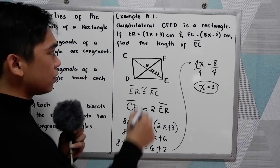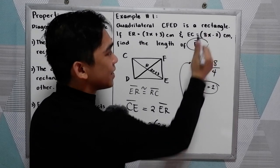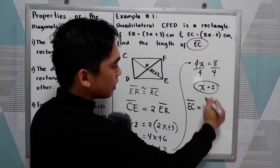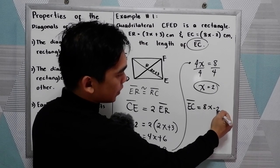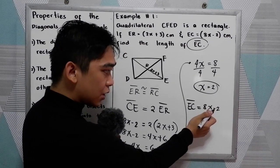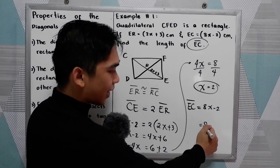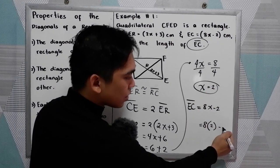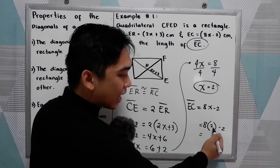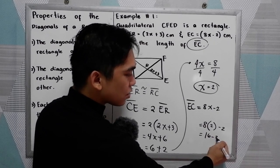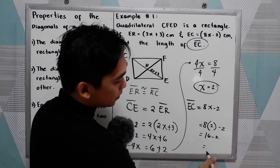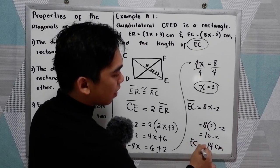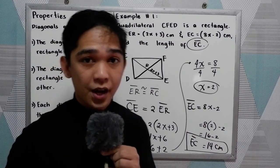So 4x equals 8, and dividing by 4, x is equal to 2. Since x equals 2, we can now get the value of E-C. E-C is equal to 8x minus 2. Substituting: 8 times 2 is 16, minus 2 equals 14. So the length of E-C is 14 centimeters.